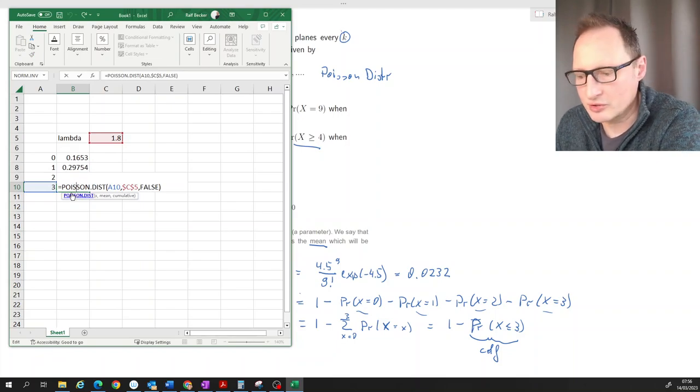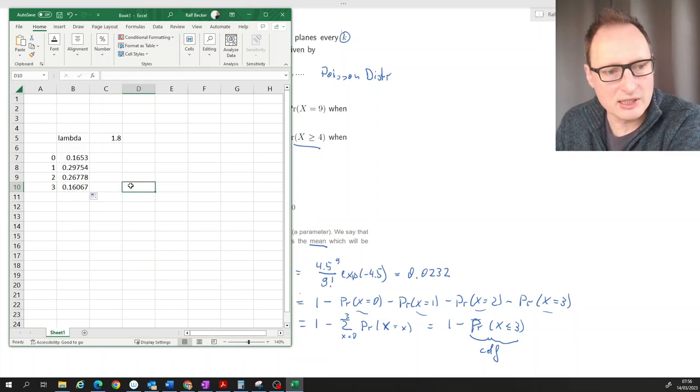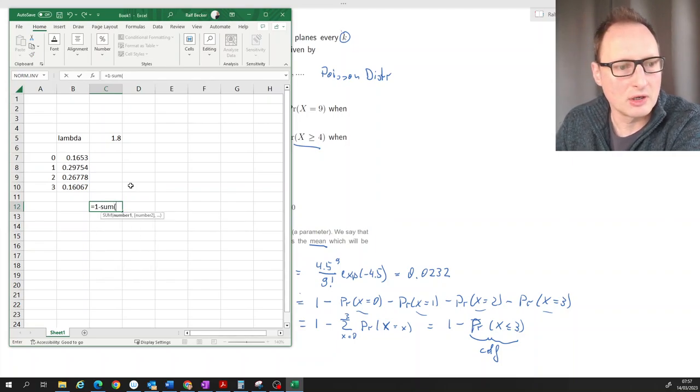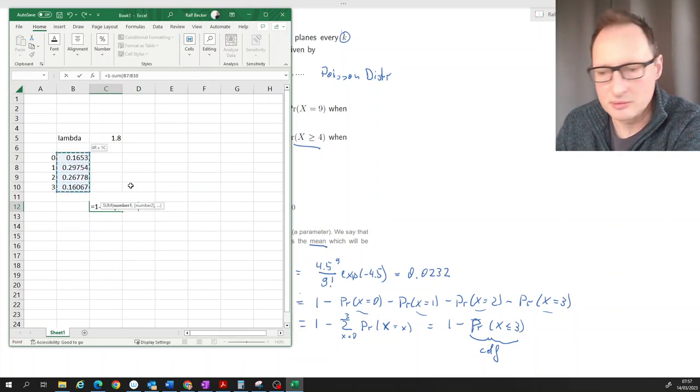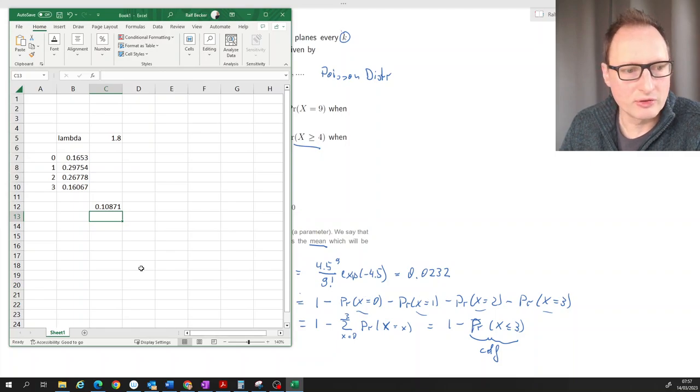Let's just check that everything works correctly. So these are the probabilities here. And of course what we need is the probability that x will be larger or equal to 4 is 10.871 percent.